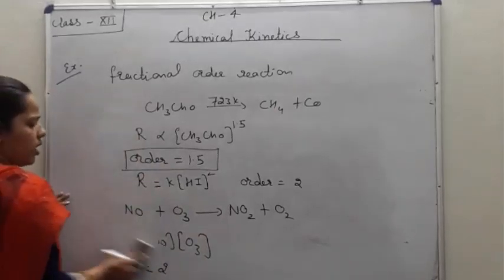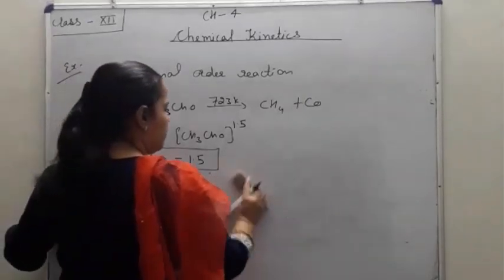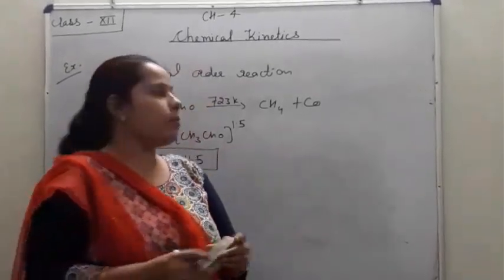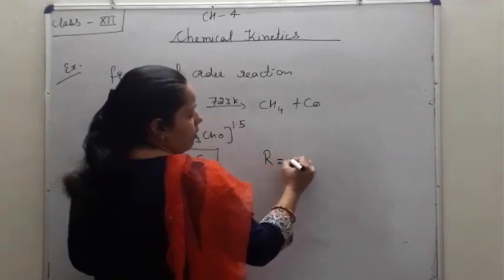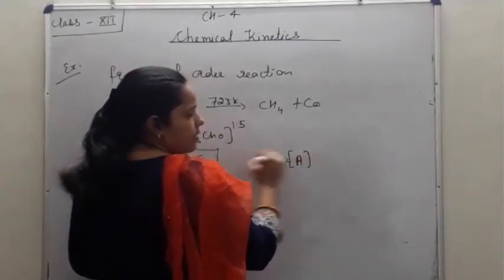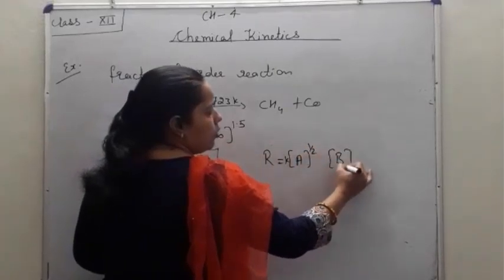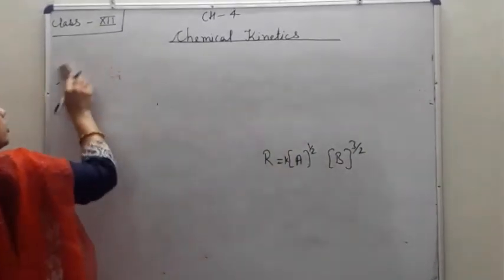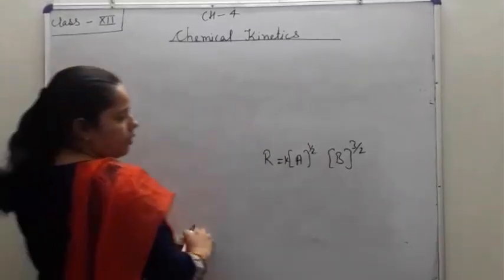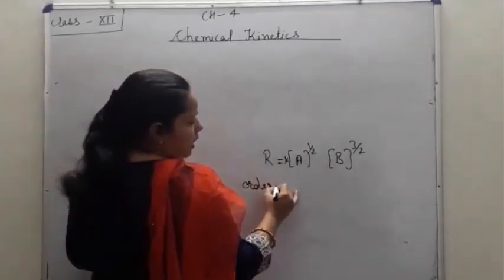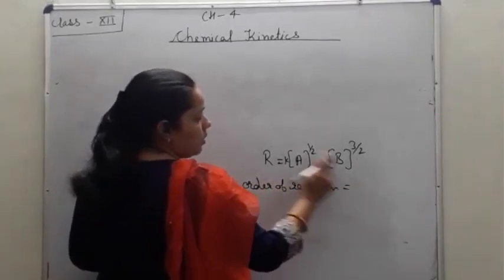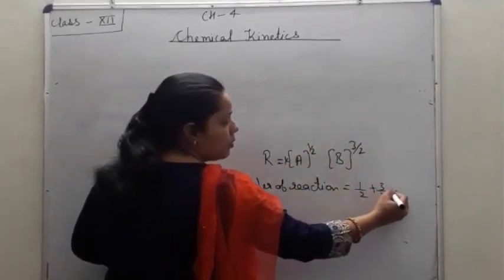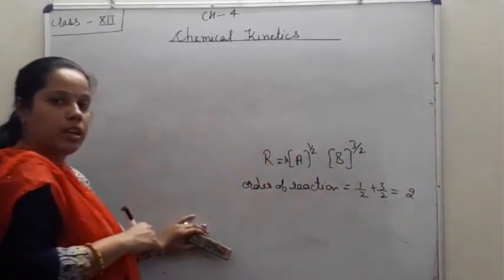Now some numerical problems on the basis of the order of reaction — these are required in the board exam. If you are given the rate law expression R, you will calculate the order of reaction by summing the powers of the molar concentrations. For example, if the powers are 1/2 and 3/2, the order = 1/2 + 3/2 = 2 — second order.